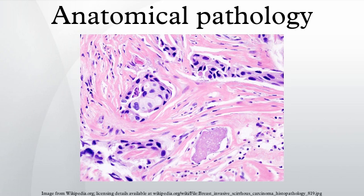In situ hybridization allows specific DNA and RNA molecules to be identified on tissue sections. When the probe is labelled with fluorescent dye, the technique is called FISH (fluorescence in situ hybridization).